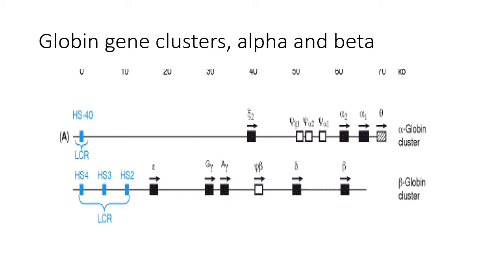The beta globin locus is a little more complicated. We have a very early version, the epsilon form, made in early embryos. Then we have the fetal forms — G gamma and A gamma — made during development until birth. Then there's a pseudogene, and then two mature adult globins switched on about the time of birth: delta and beta. Beta is the major one; there's very little delta expression generally speaking.